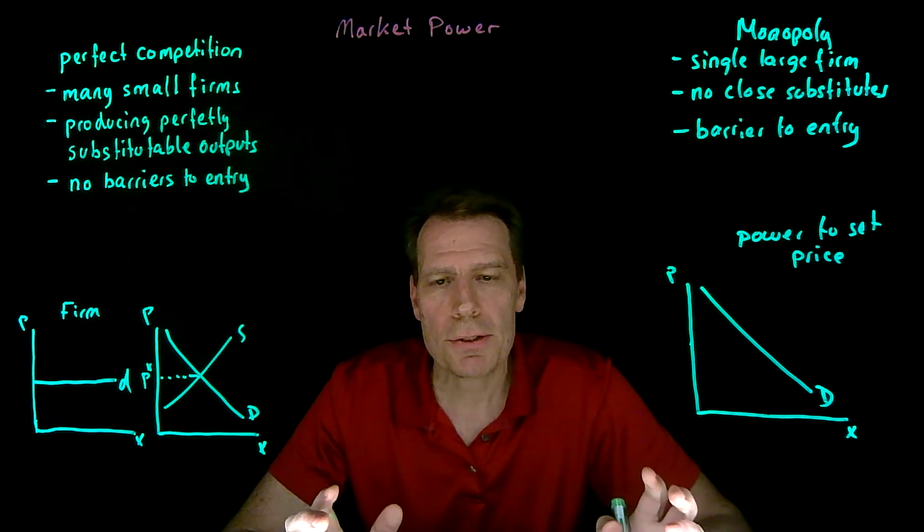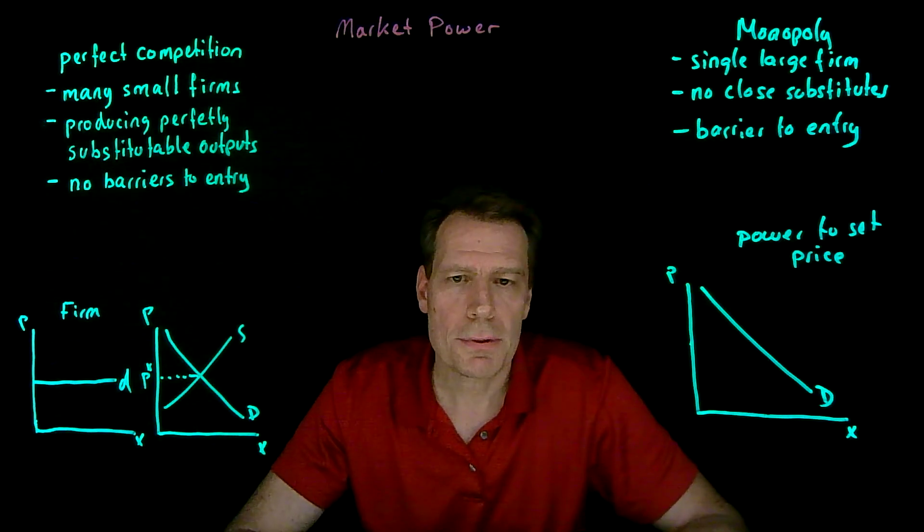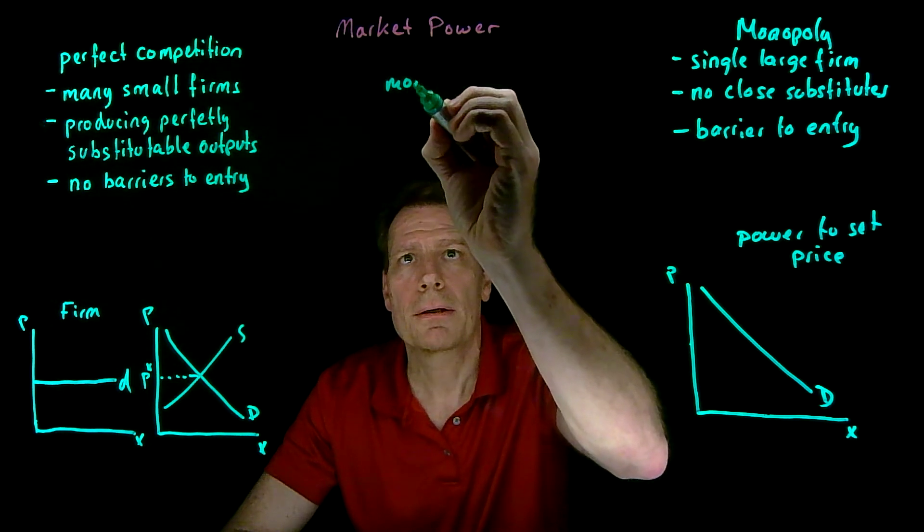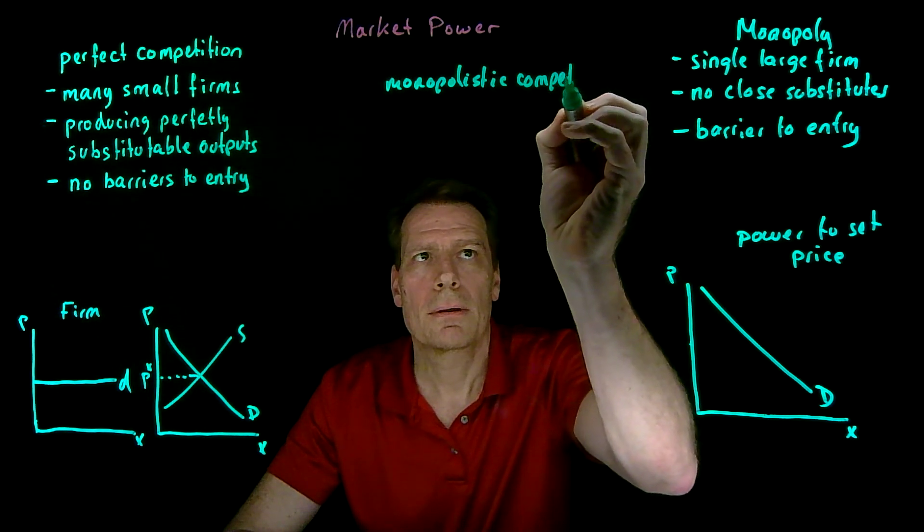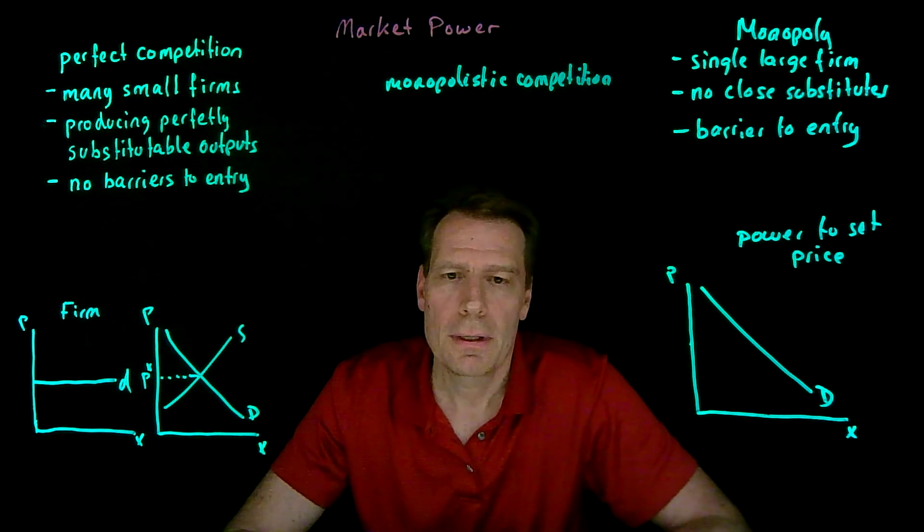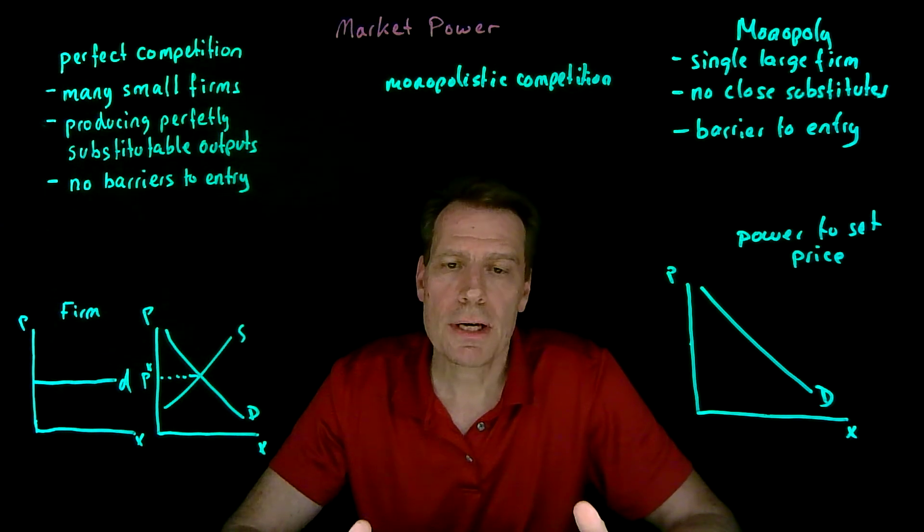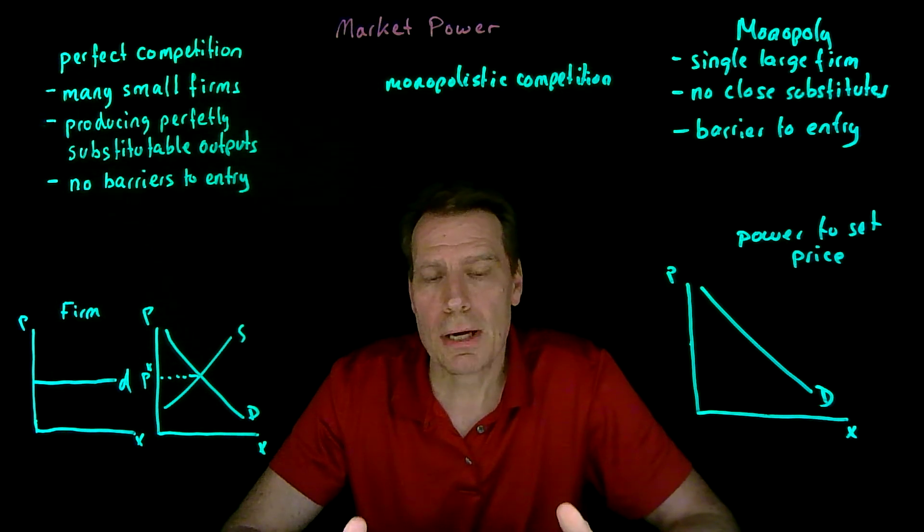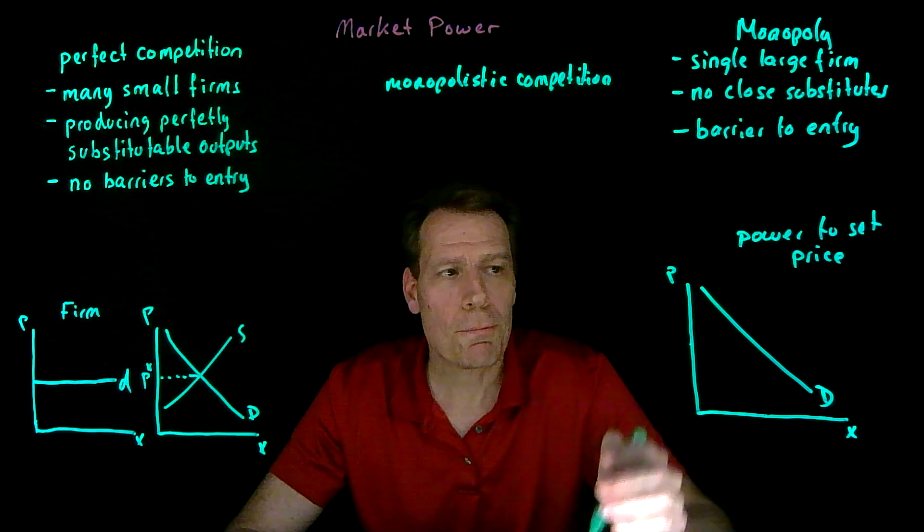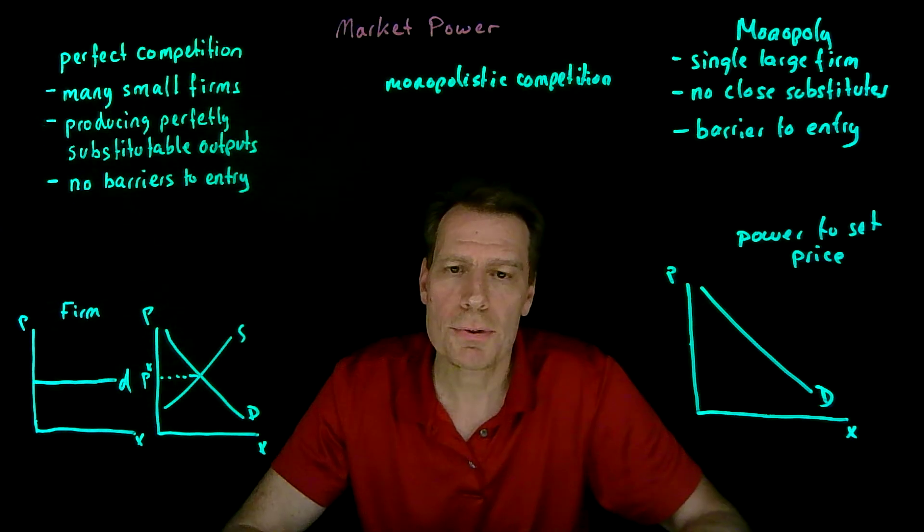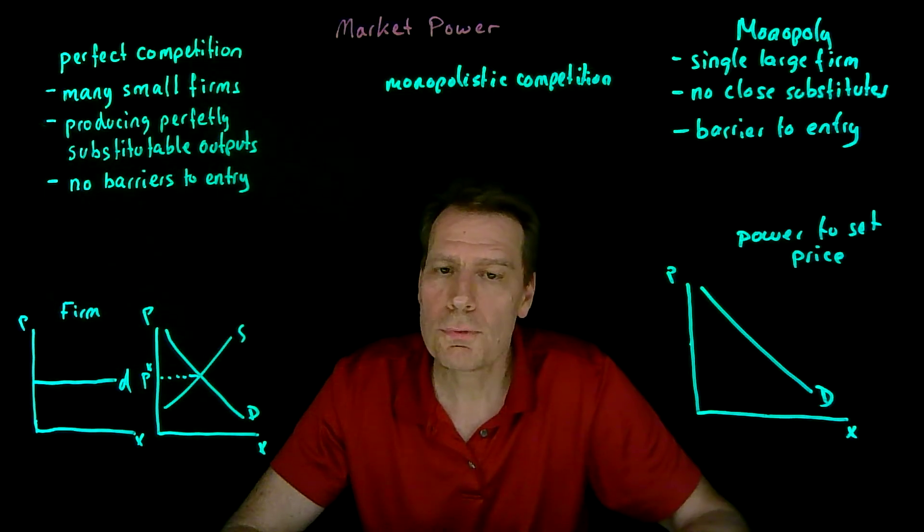There are many market structures between perfect monopoly and perfect competition. We'll get to those market structures, including monopolistic competition. That's a market structure where there are smaller barriers to entry and firms produce somewhat differentiated products. There are some substitutes to their products, but not perfect substitutes, so each firm has a somewhat downward sloping demand curve and therefore some power to set price. But there's more than one firm and lower barriers to entry, so new firms could enter those markets.